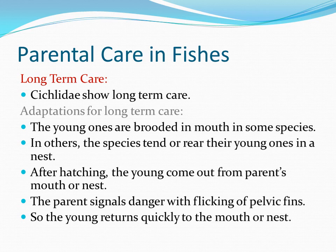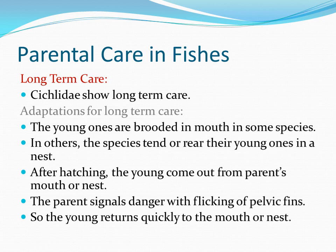Now we will discuss long-term care provided by Cichlidae. Cichlidae is a family of fishes comprising more than 1,300 species in the order Perciformes, many of which are popular aquarium fishes. Cichlids are primarily freshwater fishes found in tropical America, mainland Africa, Madagascar, and southern Asia. The majority of species are African, appearing in great diversity in the major African lakes. These species usually do not grow more than 30 cm in length. They show different adaptations for long-term care: young ones are brooded in the mouth in some species, while in others the species tend or rear their young in a nest. After hatching, the young come out from the parent's mouth or nest. The parent signals danger with a flicking of pelvic fins so the young return quickly to the mouth or nest.